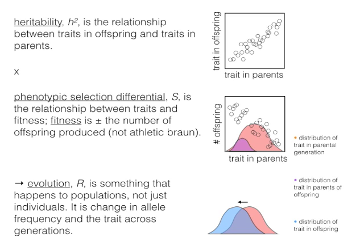Heritability is sometimes symbolized H². Don't worry about the squared part — that's from statistics, and you should never take the square root of H². Heritability is the relationship between traits in offspring and traits in parents. If you measure the beaks of a bunch of birds and relate the beak sizes of offspring to those of their parents, the slope of that line is related to heritability — you can derive heritability from that slope.